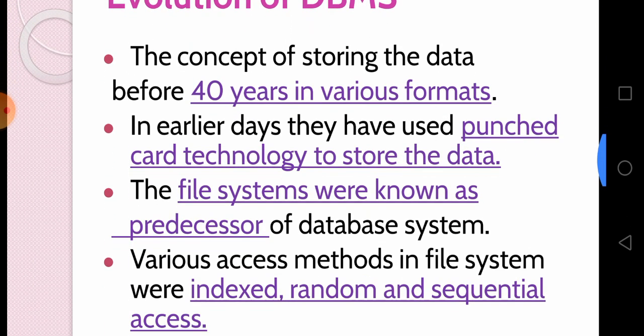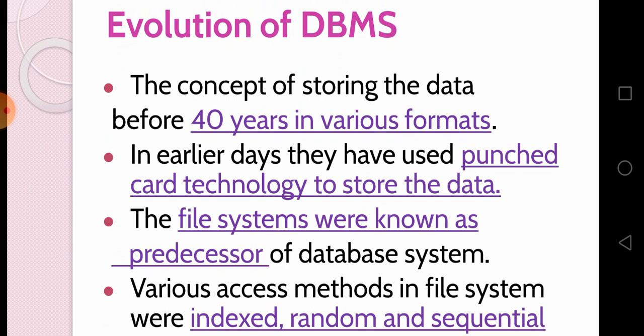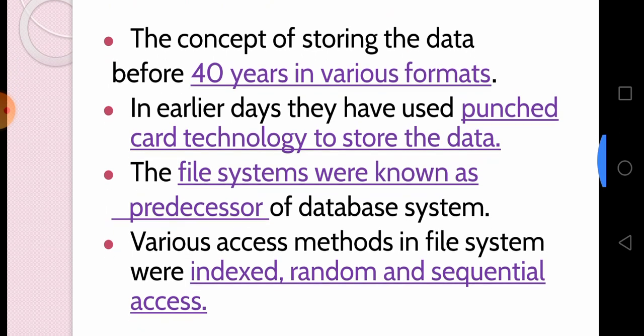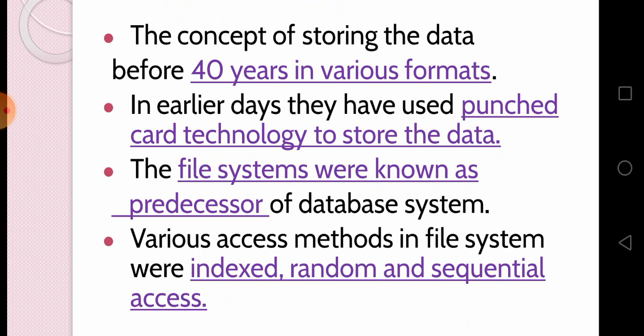Regarding the evolution of databases: the concept of storing data goes back over 40 years in various formats. In early days, they used punch card technology to store the data. File systems are the predecessor of the database management system. The access methods used in file systems are indexed, random, and sequential.